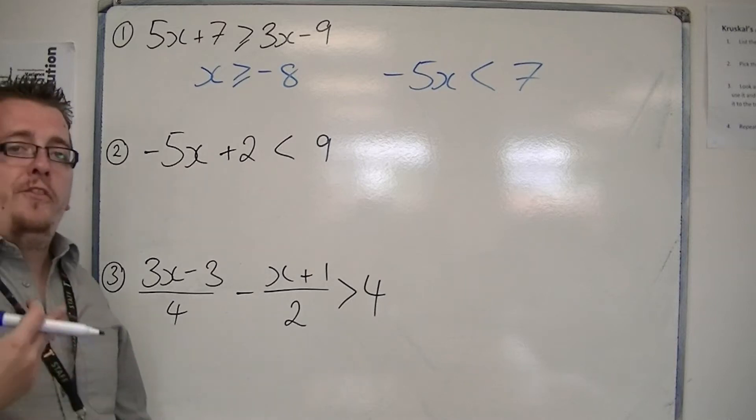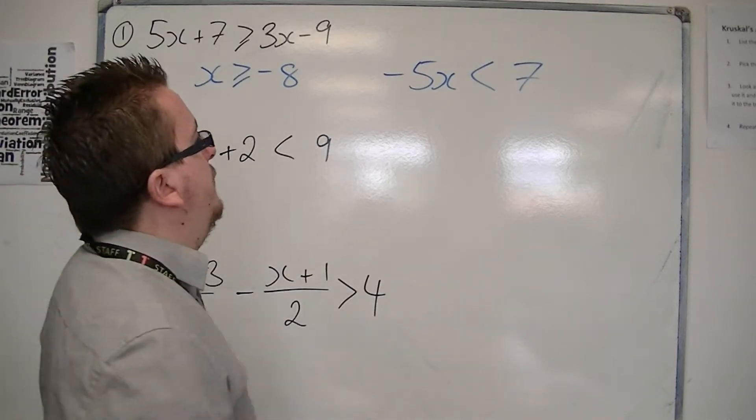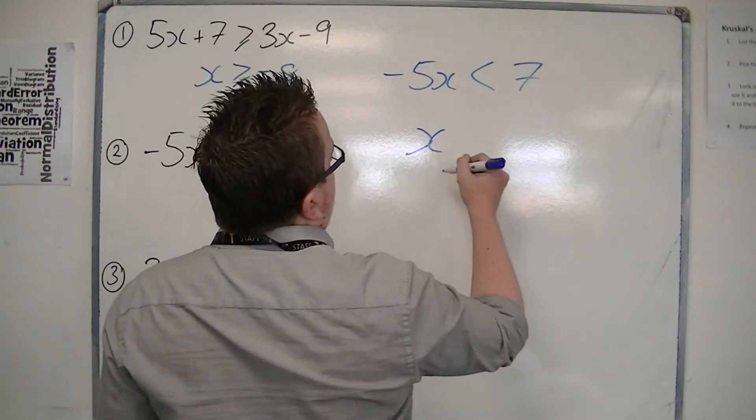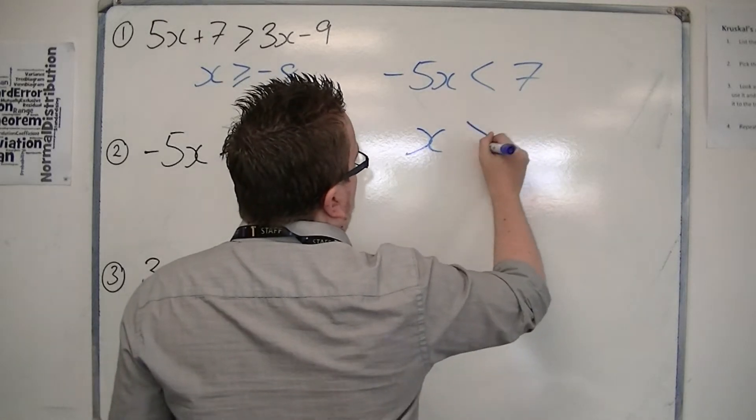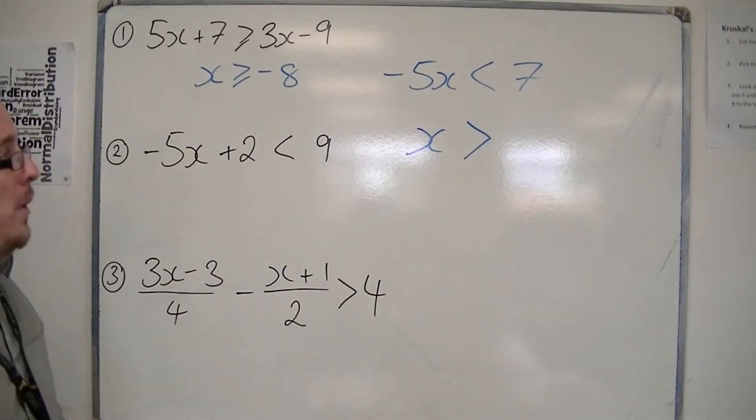Then divide through by minus 5. When dividing by a negative number, the symbol must change sides.